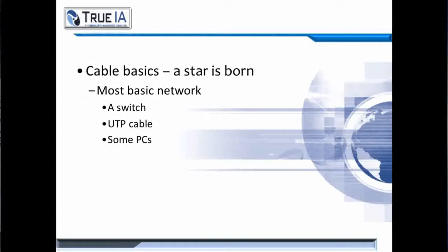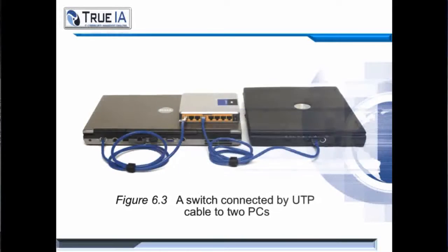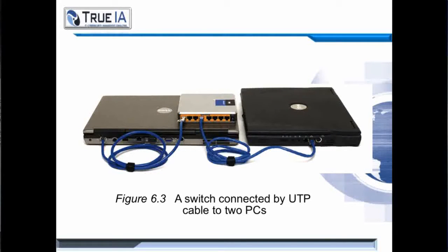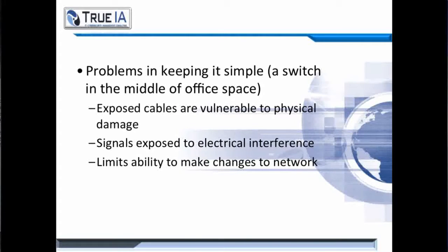Starting with the cabling basics, it's basically a star topology. At its heart, the most basic network is a switch, some sort of UTP cable, and some PCs. You see a switch, some UTP cable, and some PCs — this is a star network. Fairly simple. However, the problem that we have is keeping it simple. For safety factors, a switch in the middle of an office space just isn't practical.